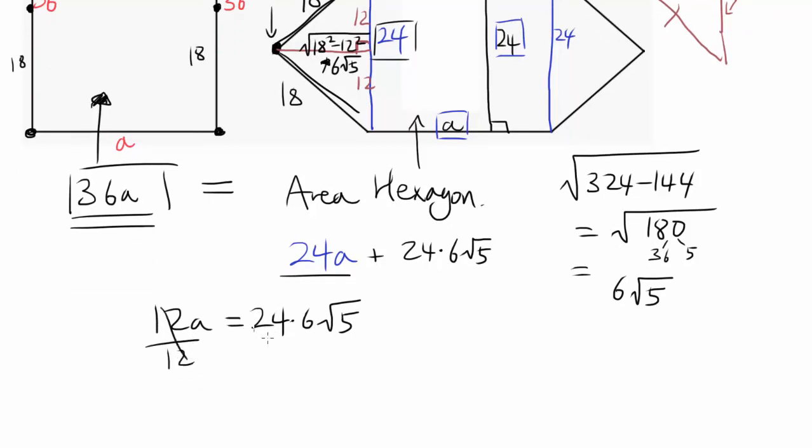Dividing by 12 cancels out 12, and you get a is equal to 24 divided by 12 is 2, times 6 is 12, times square root of 5.